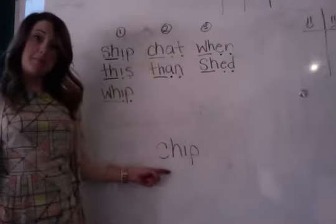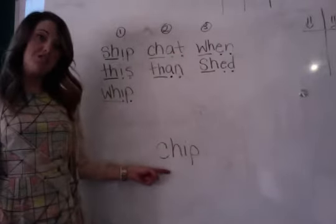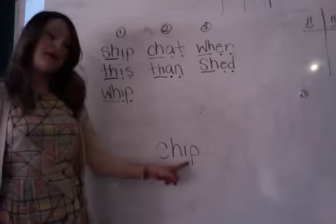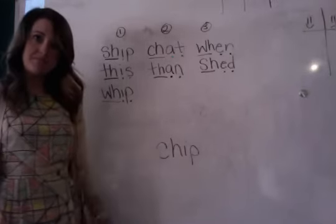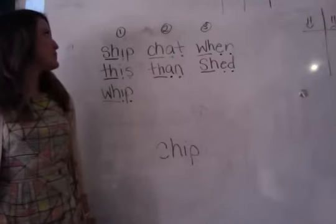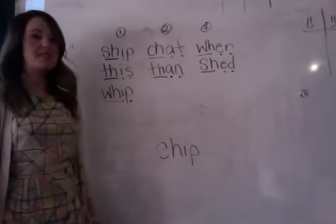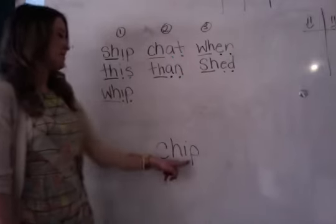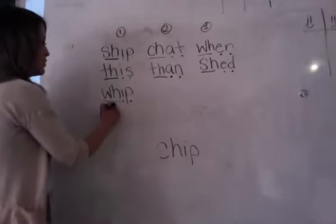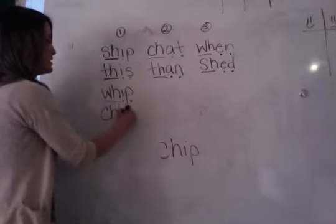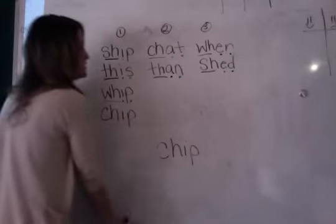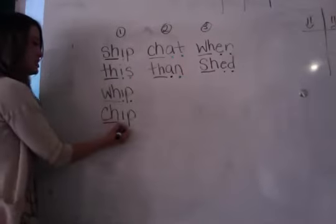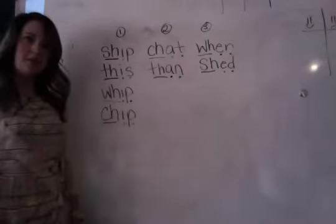This is the word chip. Say chip. Now let's say the sounds for chip: Ch, I, P — chip. Where does chip go? Correct — chip goes under column one. It has a short I sound. Say and write chip under column one: Ch, I, P — chip. Now let's dot and dash: Ch, I, P — chip.